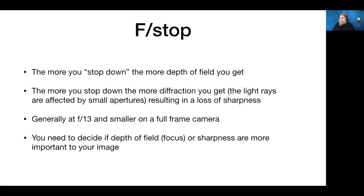The more you stop down the lens, the more depth of field you get, but at the same time, the more diffraction you get. As the aperture gets smaller, the light rays have to bend around it — sort of like putting your thumb over a garden hose. The light beams interfere with each other and cause a softer image. So you have to decide whether depth of field or sharpness is more important when you get down to f11, f16, or f22.